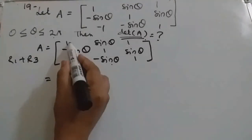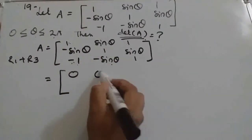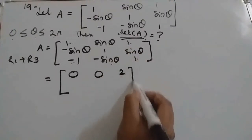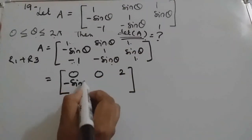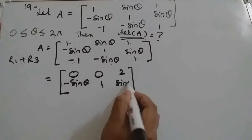So see what we will get here: 0, 0, 1 plus 1 is 2. And remaining row elements will be the same.